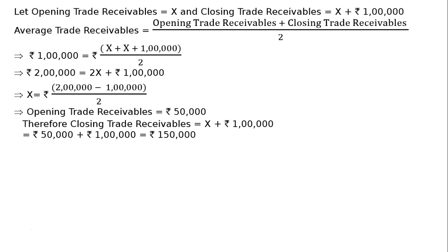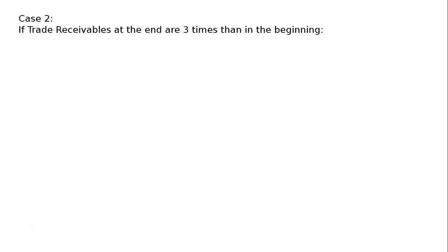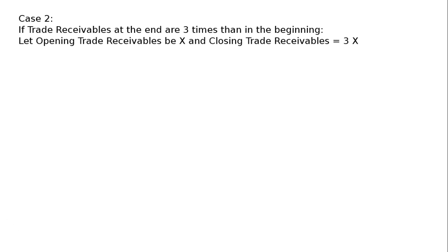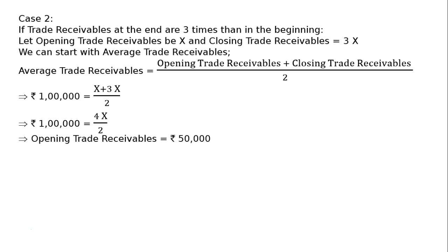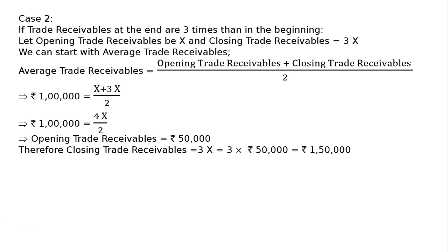Case 2: if trade receivables at the end are 3 times those at the beginning. Let opening trade receivables = x and closing trade receivables = 3x. Average trade receivables = (x + 3x) divided by 2 = rupees 1 lakh, so 4x divided by 2 = rupees 1 lakh, giving x = rupees 50,000. Therefore opening trade receivables = rupees 50,000 and closing trade receivables = 3 × rupees 50,000 = rupees 1 lakh 50,000.